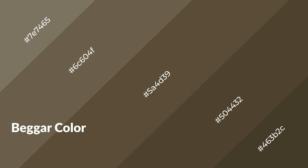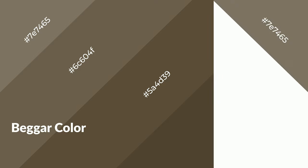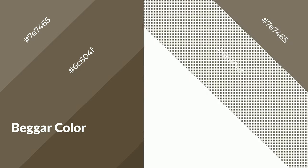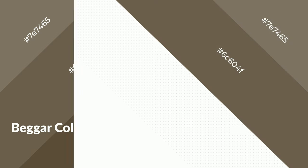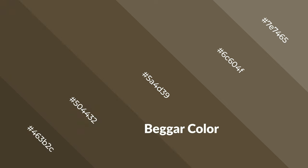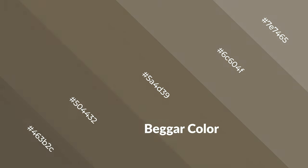Beige is a warm color and it emits cozier and active emotions. Warm colors are symbols of warmth, fire, heat, and sunshine. They also evoke joy, passion, love, and even anger. You can see warm colors used in restaurants and gyms.